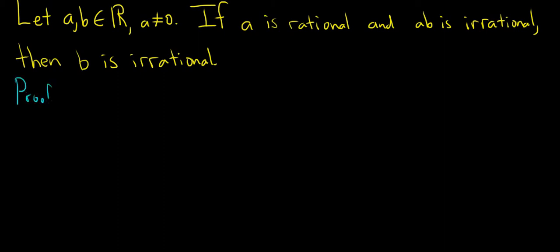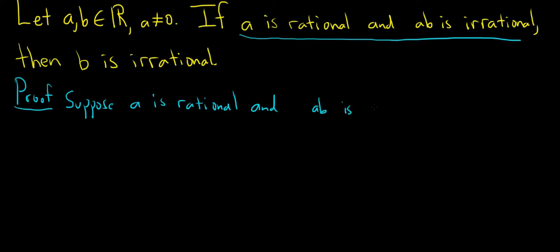Proof. We're going to do a proof by contradiction. So we get to assume that this is true. So we'll say suppose A is rational and AB is irrational.